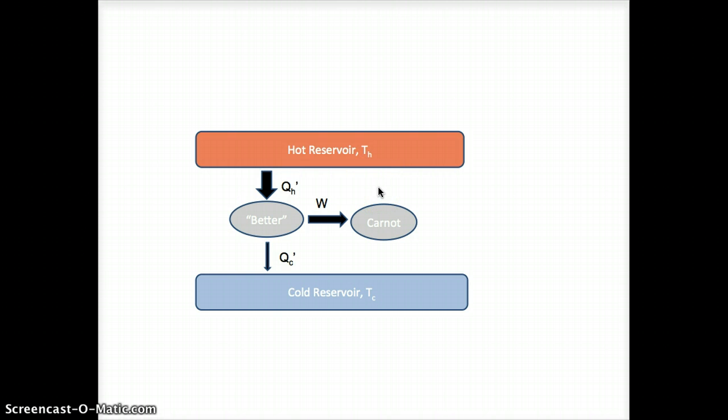Which means, if instead, if we run the Carnot in reverse, we should get a larger amount of heat out by doing the same amount of work on it. So here's our input and output heat for our Carnot engine. QC is larger than QC prime. QH is larger than QH prime. And this is due to the work that we're doing on our Carnot engine, to make it run in reverse.